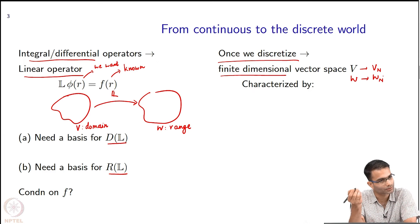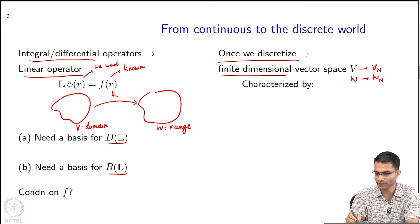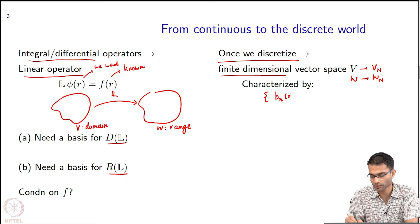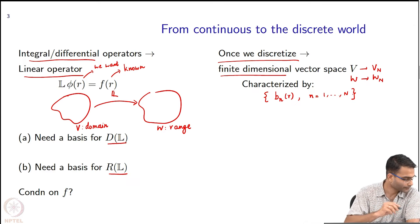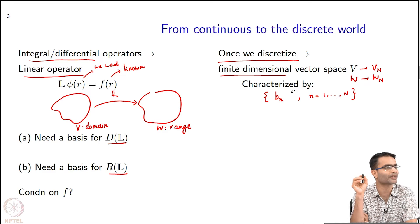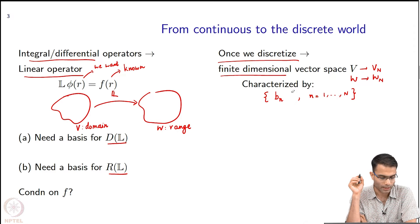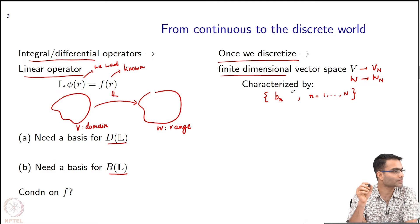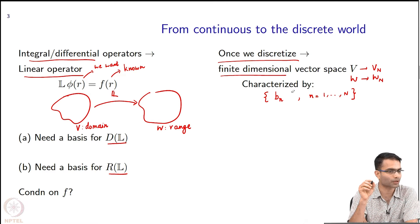To characterize a vector space, what is the most basic building block? Basis functions, right. So it is characterized by a set of basis functions. So let us call them b_n of R, n is equal to 1, 2, ..., N. We do not even need this over here, just n vectors. These n vectors will characterize a vector space. And for these n vectors to characterize the vector space, what is the requirement on these vectors?